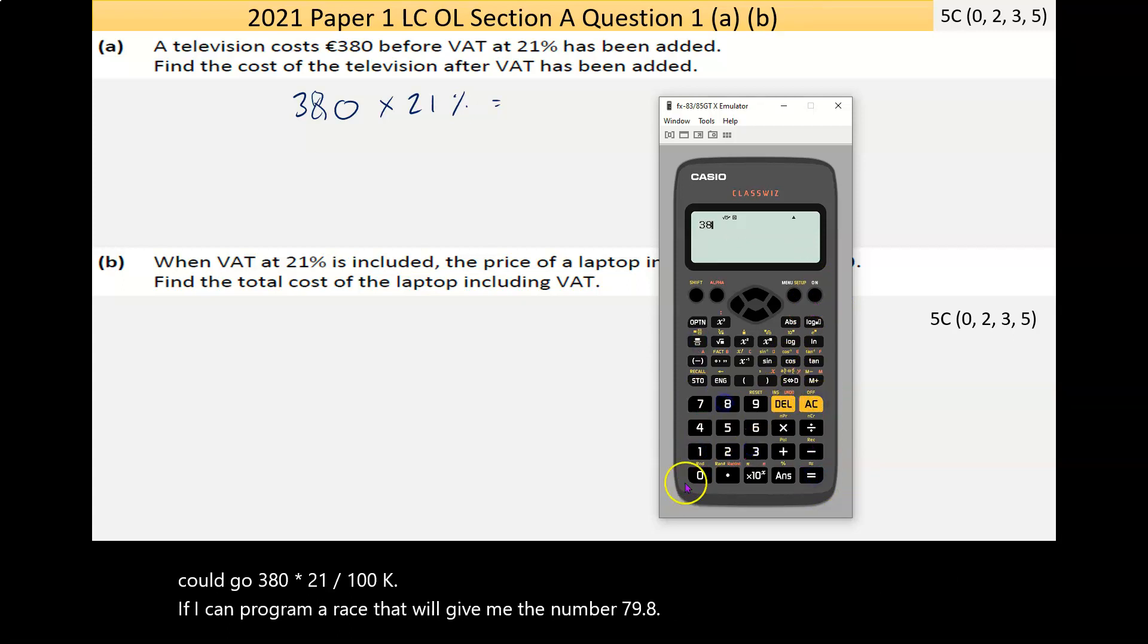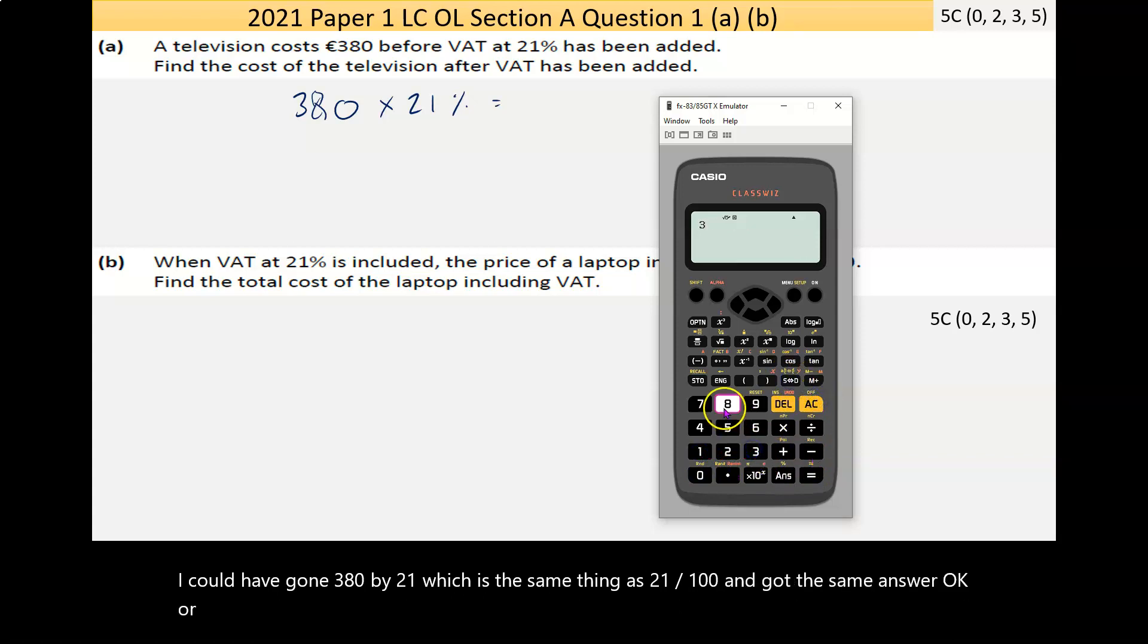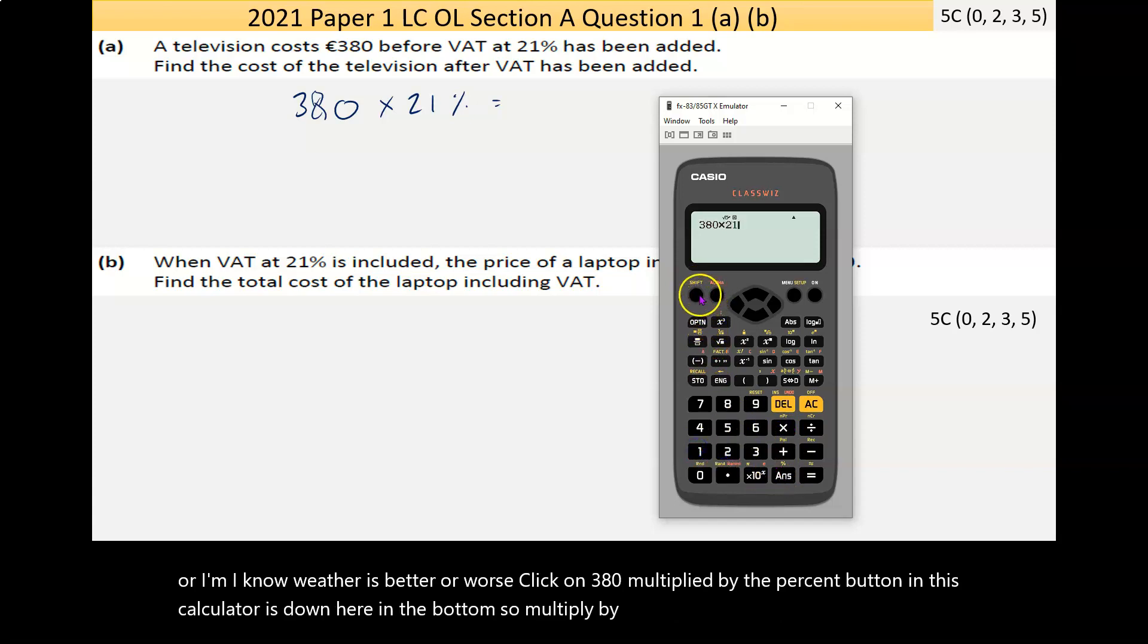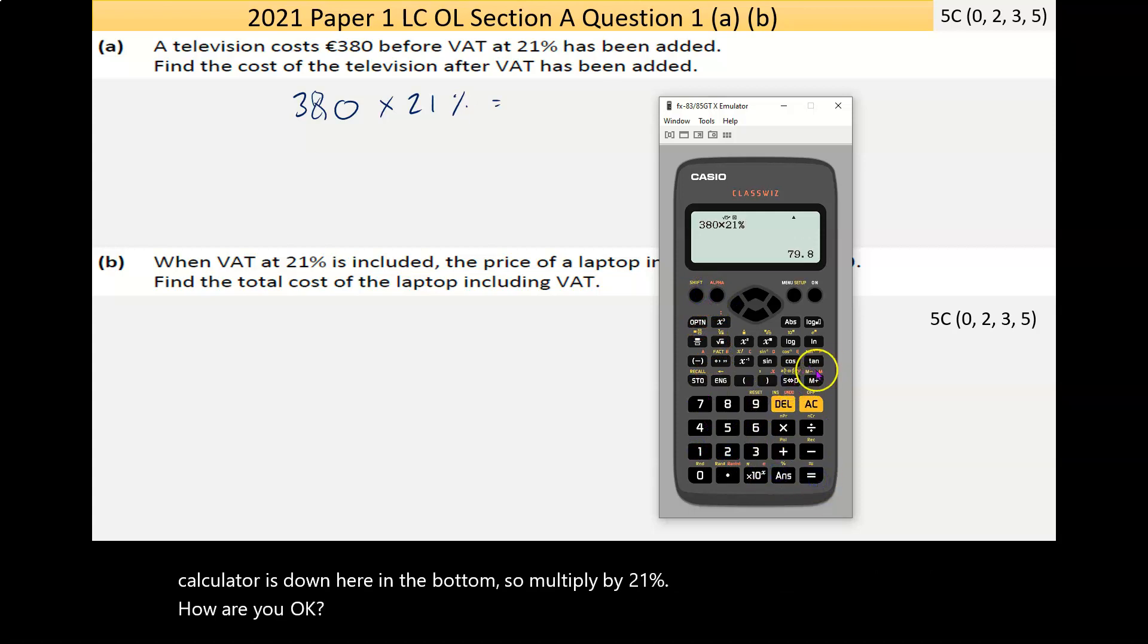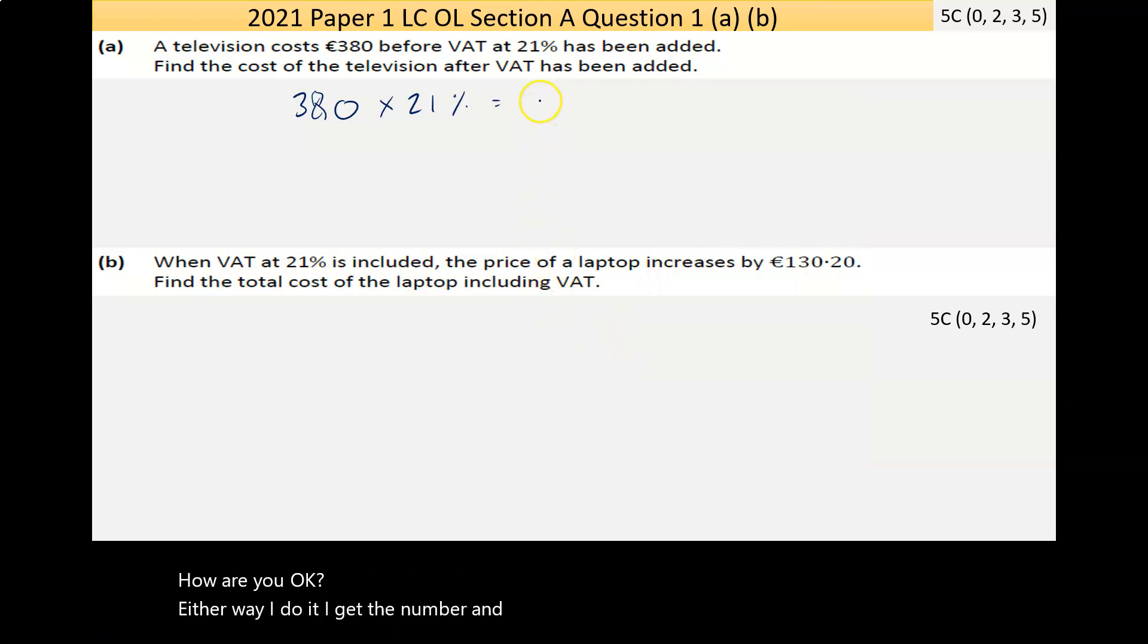I could have gone €380 by 0.21, which is the same thing as 21 over 100, and gotten the same answer. I could have gone €380 multiplied by the percent button - multiply it by 21 percent. Either way I do it, I get the number 79.8 euro.